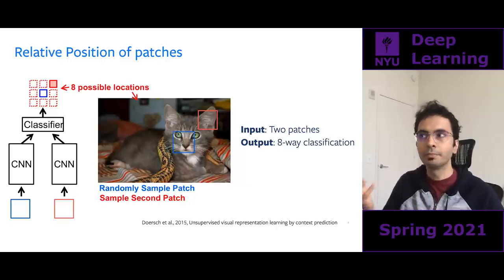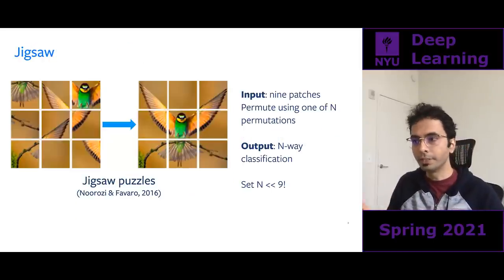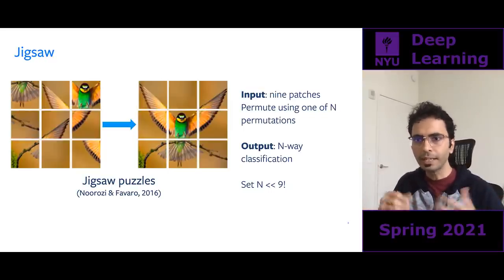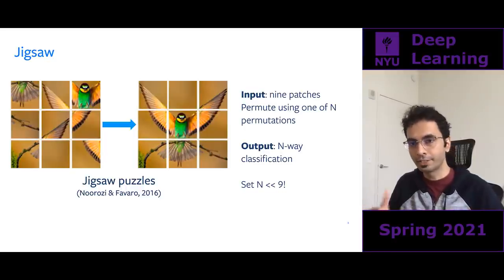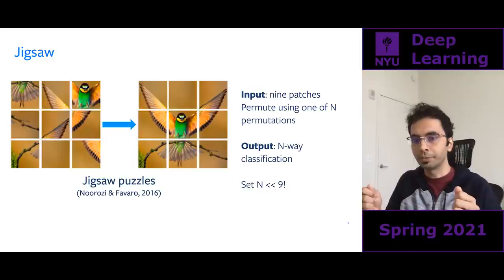You use a Siamese network, feed the image patches in, concatenate the features, and solve a classification problem predicting the relative position of the red patch with respect to the blue patch. The interest is not to solve this relative position task — the interest is to use it as a way to learn features. Another popular task is jigsaw puzzles: you take nine image patches, permute them randomly, and classify which permutation was applied. Because nine factorial permutations is very large, you restrict to a fixed set of 1,000 permutations.